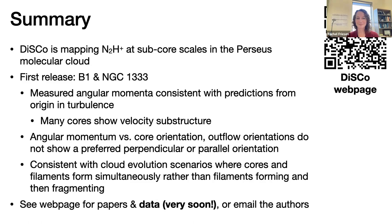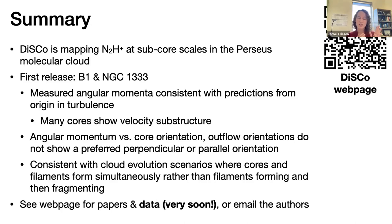Q&A: Could magnetic fields be encouraging star formation, and is there any evidence for ambipolar diffusion? Regarding ambipolar diffusion, we haven't gone into that in much detail. We can't yet say magnetic fields encourage star formation from these data. What we can say is we don't tend to see much correlation between magnetic field orientation on larger scales and the core properties. We haven't looked in detail on core scales in these particular regions, and magnetic field strengths are harder to measure.